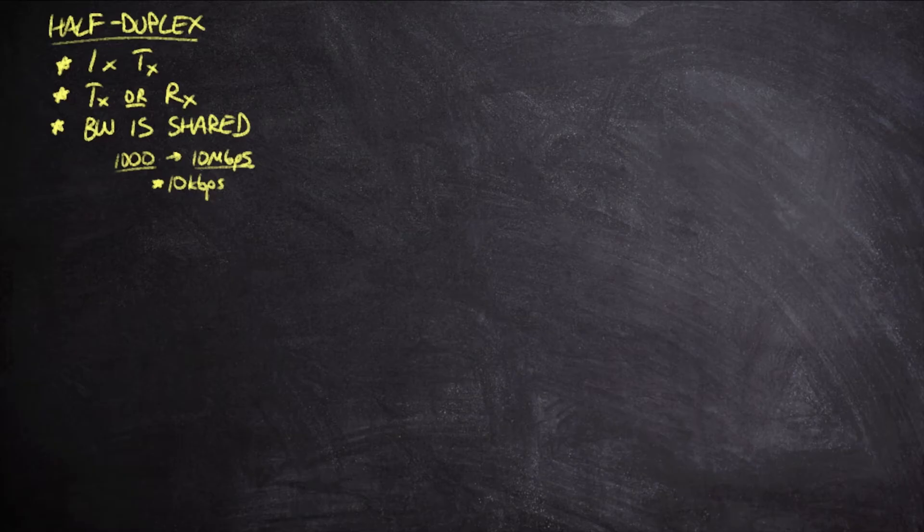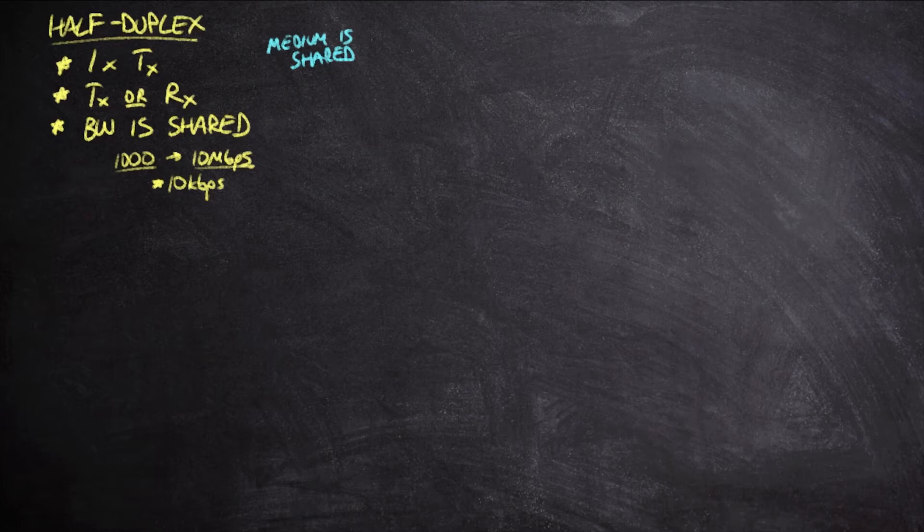The problem is that until now, we have only ever been able to consider half-duplex operation. The reason for this is because the medium has been shared. But we also just called out that now we've got network switches, and we're no longer sharing a medium. And so that's thanks to two components here.